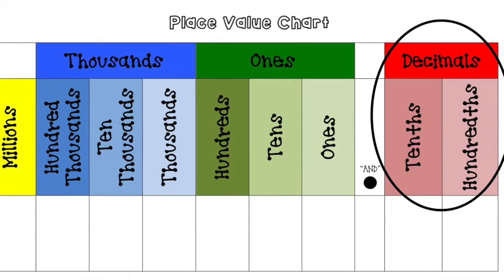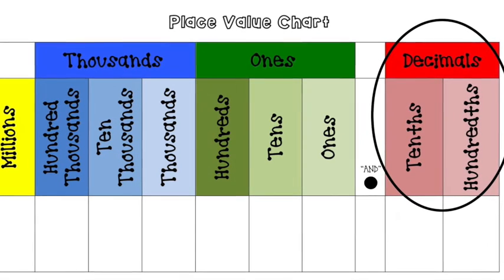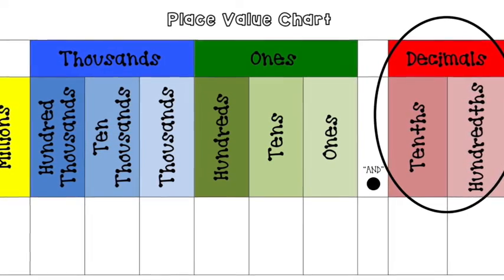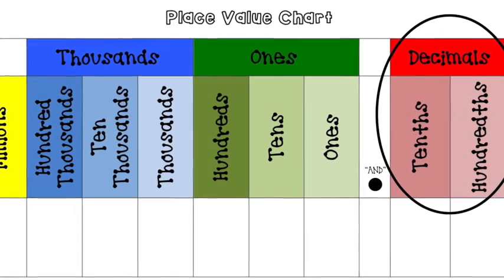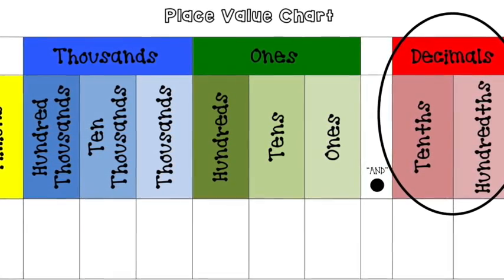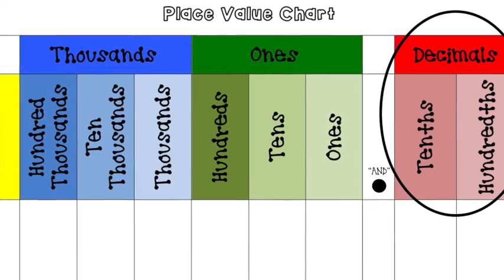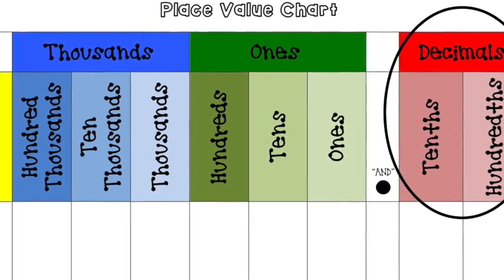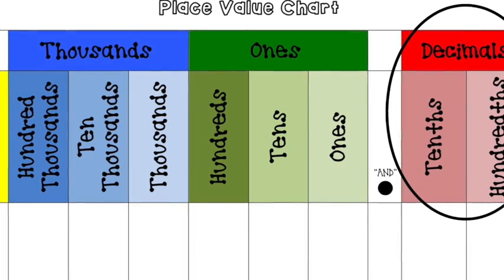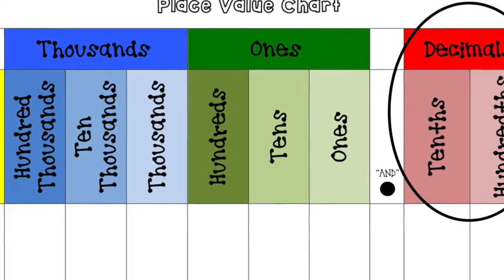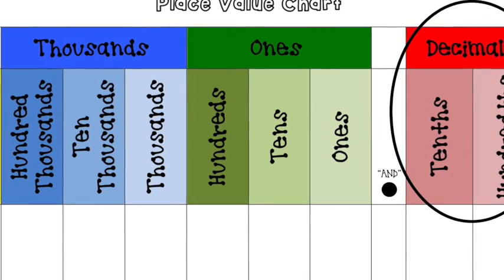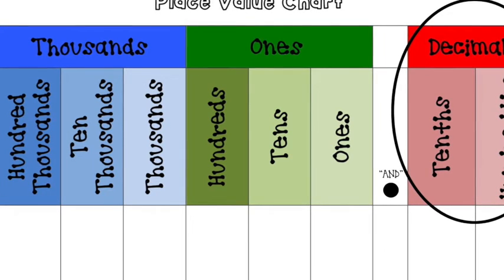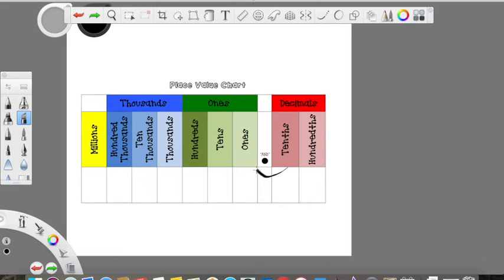Now let's look at the decimals. These are on the other side of the ones. Normally we would just see the ones and then it ends. However, we can add a decimal point and some fractional values. This means that we're now dealing with parts of a whole — parts of 1, as long as it's any whole broken up into parts. The place values we're going to worry about are tenths and hundredths. Let's look at the tenths place.